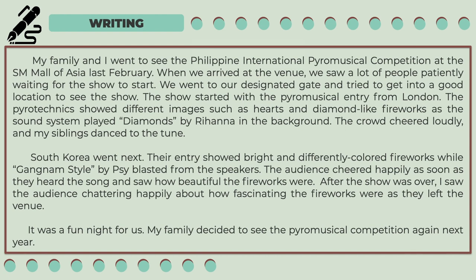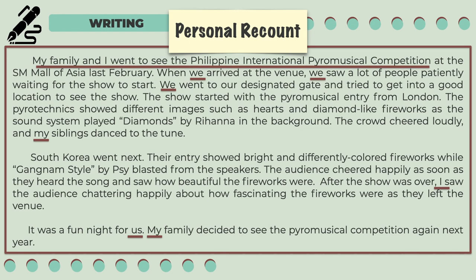The audience cheered happily as soon as they heard the song and saw how beautiful the fireworks were. After the show was over, I saw the audience chattering happily about how fascinating the fireworks were as they left the venue. It was a fun night for us. My family decided to see the pyromusical competition again next year. In order to identify the type of recount, you need to first identify what the text is all about. This text is about the author and his or her family's visit to the Philippine International Pyromusical Competition. Next, identify the point of view. The author used the pronouns my, I, us, and we — these are personal pronouns used to indicate the author's personal connection. Therefore, this text is an example of a personal recount.